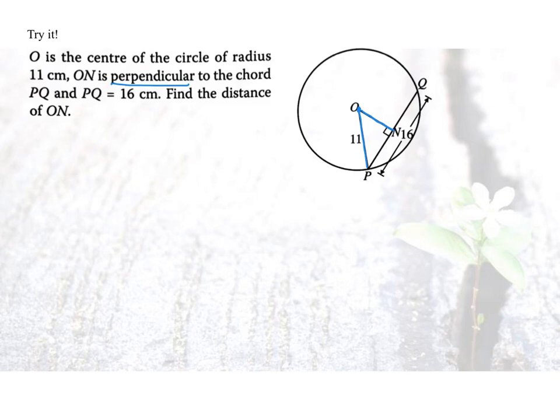Using symmetrical property 1, if I have ON to be perpendicular, PQ will be cut into 2 equal halves. So what is the distance for NP? NP will now be 8cm. Do you see the right angle ONP?